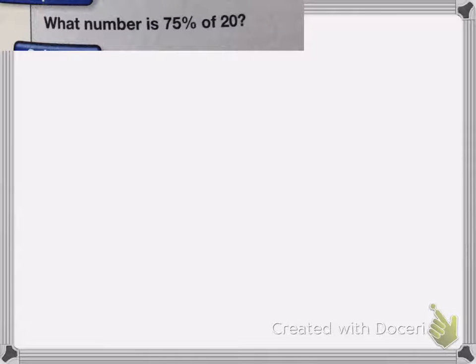All right, and this one, which is, what number is 75% of 20? In this case, we have to kind of figure out what it's asking. So we have what number, and when we don't know what it is, we always put it in a letter.